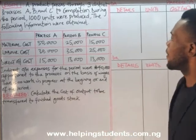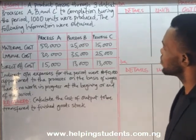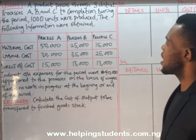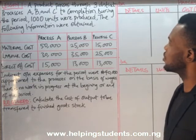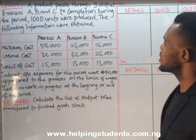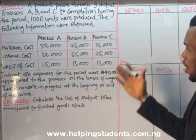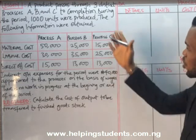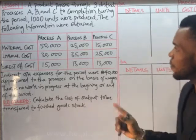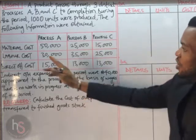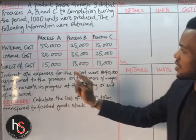A product passes through three distinct processes — A, B, and C — to completion. During the period, 1,000 units were produced and the following information was obtained. We have been given the direct cost for process A, process B, and process C; labor costs for process A, B, and C; and direct overhead costs for process A, B, and C.